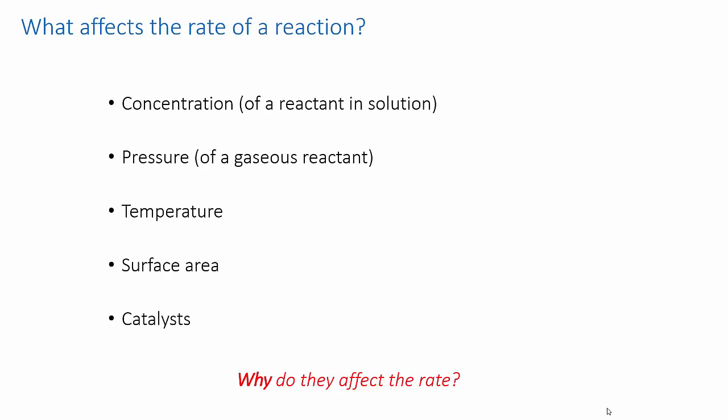In the last video we talked about the fact that the rate of reaction actually depends on the chances of a successful collision occurring between reactant molecules. Now we're going to figure out why it is that the variables of surface area, concentration and pressure, temperature and catalysts affect those chances and thereby affect the reaction rate.